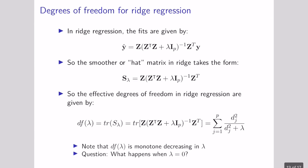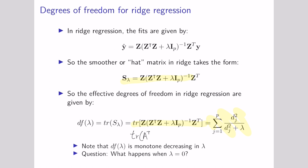In ridge regression, the fits are given by the equation we've seen before. The smoother matrix, by plugging things in, gives us a specific form. This allows us to say that the effective degrees of freedom in our ridge model equals the trace of this matrix, which equals an equation where the lambda values are decreasing the degrees of freedom. This is why ridge regression allows us to get solutions when we otherwise wouldn't — ridge regression is decreasing the effective degrees of freedom in our model. If you'd like to verify this yourself, it requires some linear algebra, and there is one specific matrix property you'll need for that.